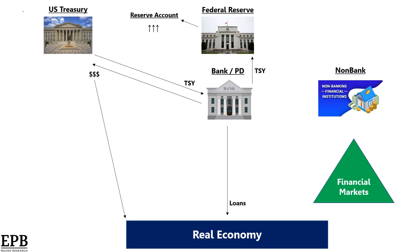So no loans means no money is being created into the real economy. Now let's say the Fed wants to buy $100 billion a month of Treasuries, but the banks only have $50 billion. The banks would still be intermediaries, but they would need to buy bonds from other institutions and then flip those to the Fed and get reserves.